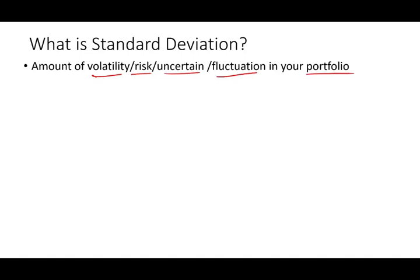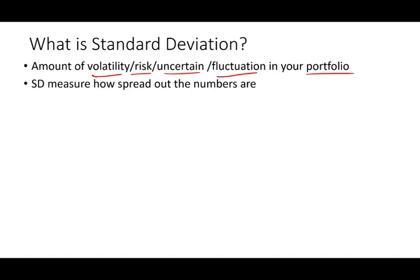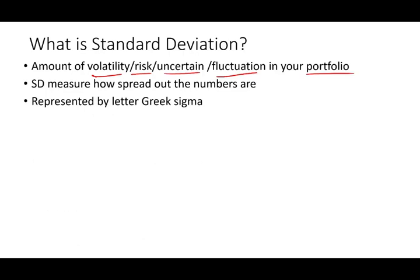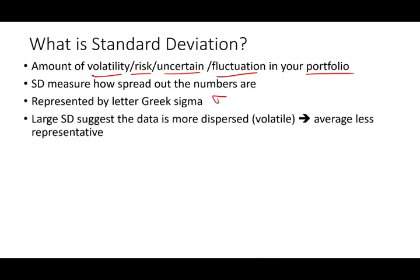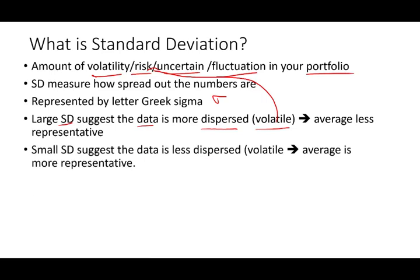Somehow we want to measure how risky a portfolio is — it's measured through the spread of the numbers, how spread the returns are. It's represented by the Greek letter sigma. Generally speaking, a large standard deviation suggests that the data is more dispersed, more volatile, more risky, so the average is less representative. If the standard deviation is smaller, the data is less dispersed, less volatile, and the average is generally more representative.